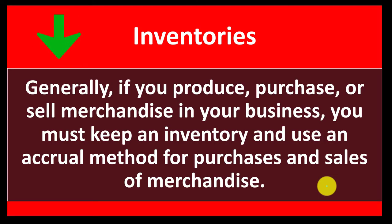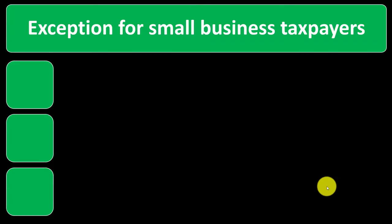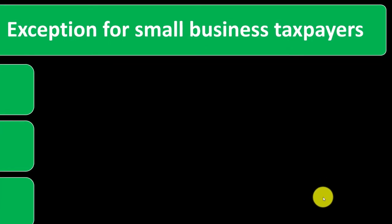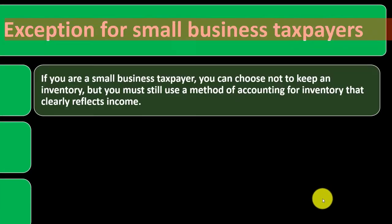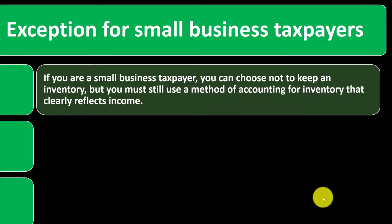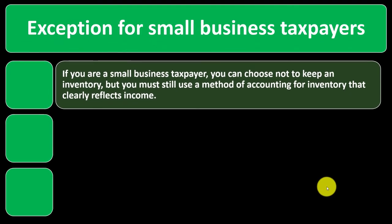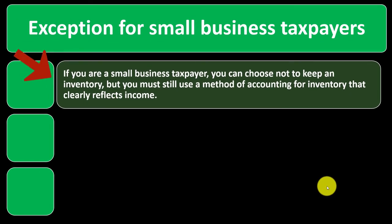So generally, if you produce, purchase, or sell merchandise in your business, you must keep an inventory and use an accrual method for purchases and sales of merchandise. That's the general rule, but there is an exception for small business taxpayers. If you are a small business taxpayer, you can choose not to keep an inventory, but you must still use a method of accounting for inventory that clearly reflects income.